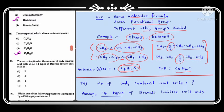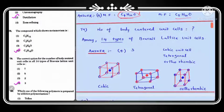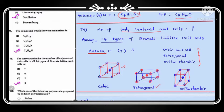Question number 79: what is the correct number of body-centered unit cells among all 14 Bravais lattice types? The correct answer is option 4. Among the 14 Bravais lattices, only three have a body-centered atom: cubic, tetragonal, and orthorhombic. So the number of unit cells having a body-centered atom is 3.